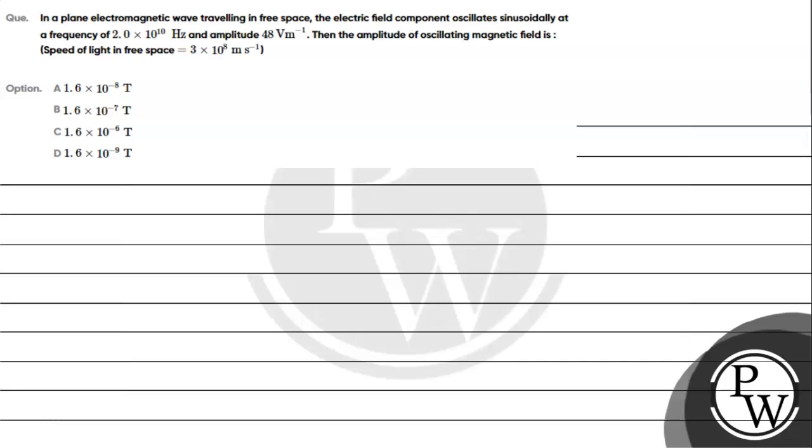Hello everyone, let's solve the given question. The question says: In a plane electromagnetic wave traveling in free space, the electric field component oscillates sinusoidally at a frequency of 2×10^10 hertz and amplitude 48 volts per meter. Find the amplitude of the oscillating